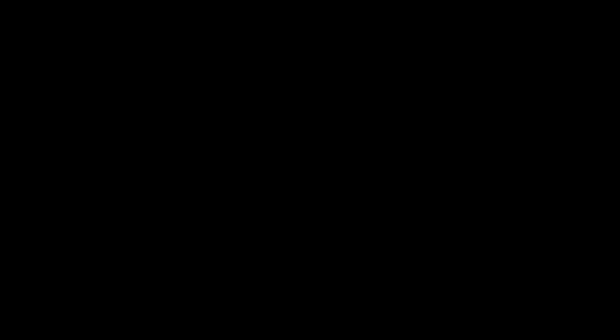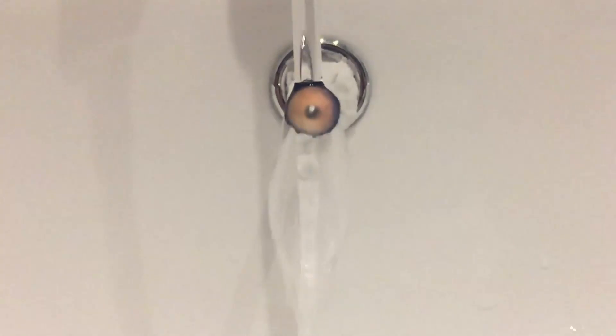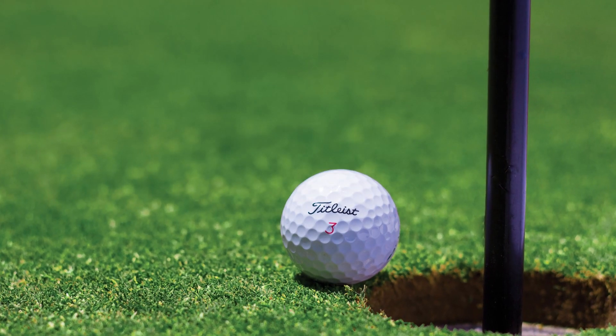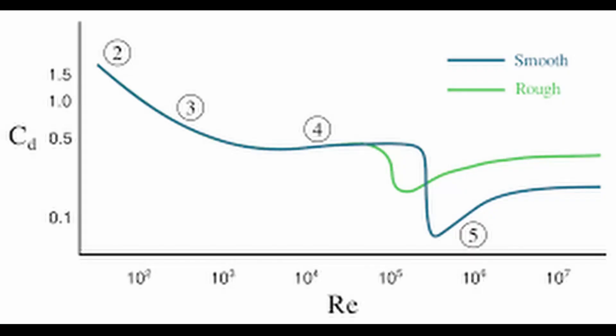How can this happen, as we normally think of drag force being proportional to an object's velocity squared? What's happening is that the flow of air around the sphere is going from laminar to turbulent, which gives a decrease in drag force. This is why golf balls have a dimpled surface — the drag crisis for a rough sphere occurs at a lower speed than for a smooth sphere, so the golf ball can be hit further. The underlying mechanics involve the boundary layer of air which encases the surface of an object, but that is beyond the scope of this video.